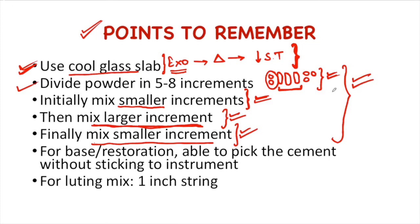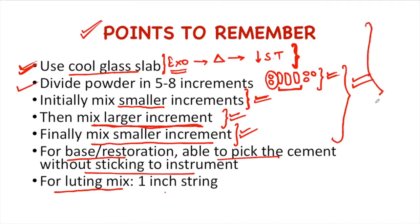So these are the reasons why we use different sizes of increments in manipulation of zinc phosphate cement. For base or restoration, we should be able to pick the cement without it sticking to the instrument. For luting, one string should be formed when the flat surface of the spatula is pulled from the mixed cement.